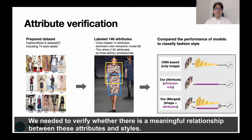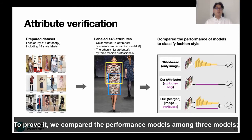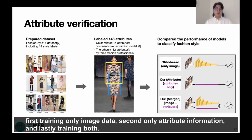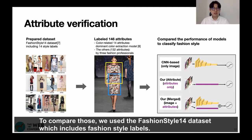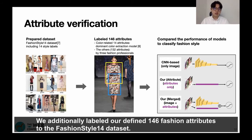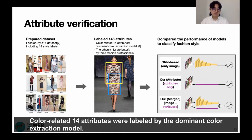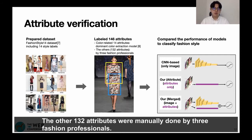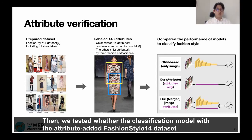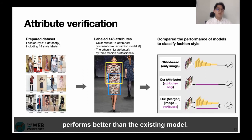We needed to verify whether there is a meaningful relation between these attributes and style. To prove it, we compared the performance among three models: first, training only on image data; second, training only on attribute information; and lastly, training on both. To compare them, we used the Fashion Style 14 dataset, which includes fashion style labels. We additionally labeled our 146 fashion attributes to the Fashion Style 14 dataset. Color-related 14 attributes were labeled by a dominant color extraction model, and the other 132 attributes were manually labeled by three fashion professionals. We then tested whether the classification model with attributes added to the Fashion Style 14 dataset performs better than the existing model.